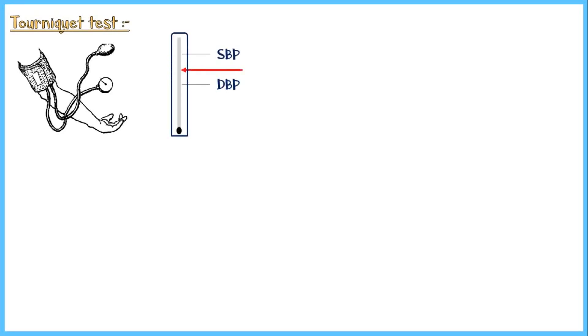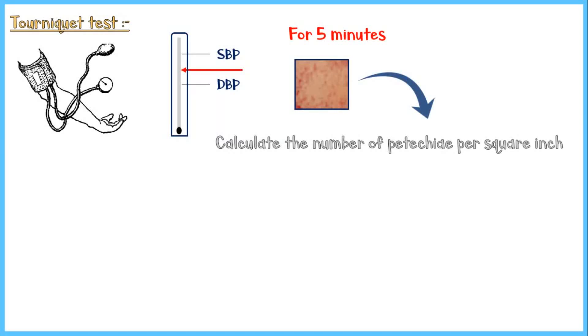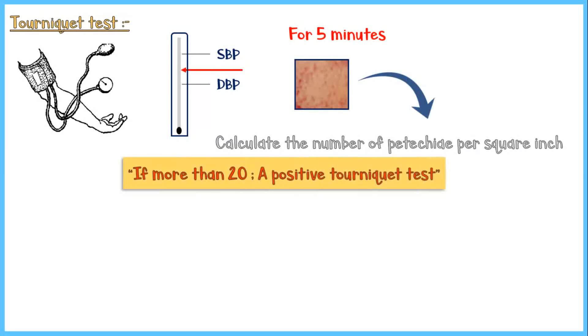A tourniquet test is performed by inflating a blood pressure cuff around the upper arm to a midway between systolic and diastolic blood pressure for 5 minutes. After removing the cuff, the number of petechiae per square inch is calculated. If it is more than 20, then it is a positive tourniquet test.